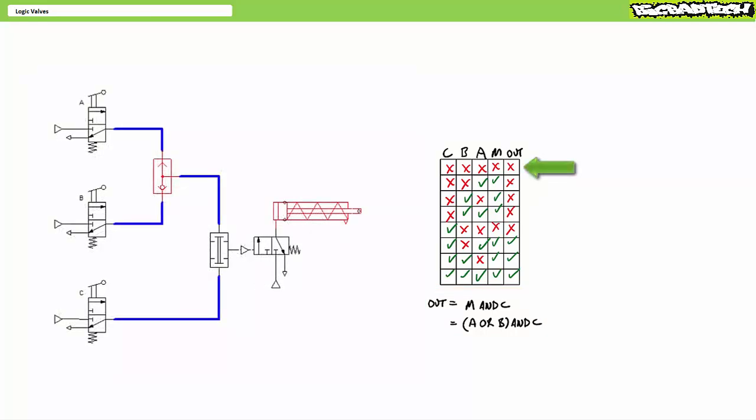With no signal present at C, B, A, the system yields no output. With no signal present at C, B and signal at A, the system yields no output. With no signal at C, A and signal at B, the system yields no output. With no signal at C and signal at B, A, the system yields no output. With no signal at B, A and signal at C, the system yields no output.